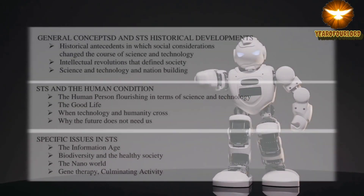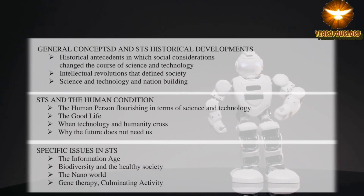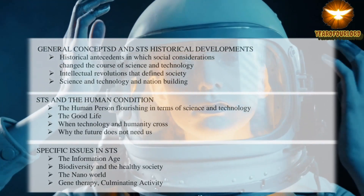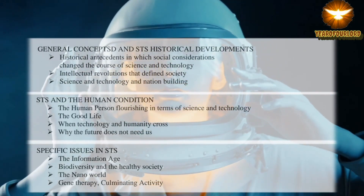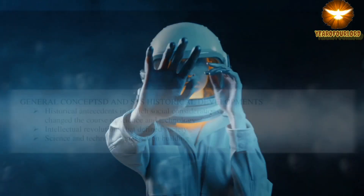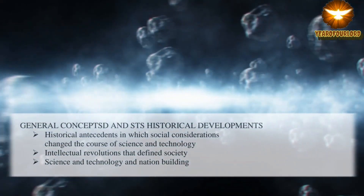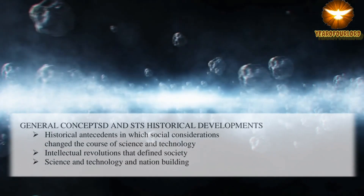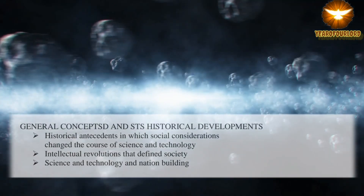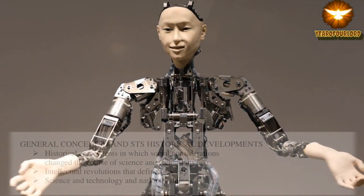Generally, this course contains three major topics. First, the general concepts and the science, technology, and society historical developments. Under this topic, it will tackle historical antecedents in which social considerations change the course of science and technology, intellectual revolutions that define society, and science and technology and nation building.